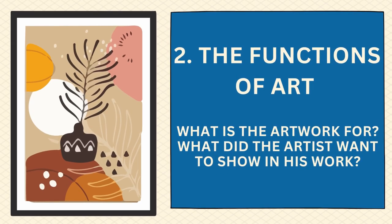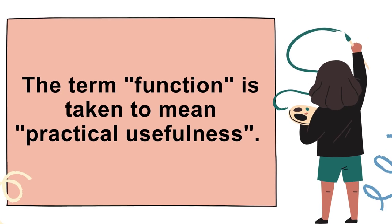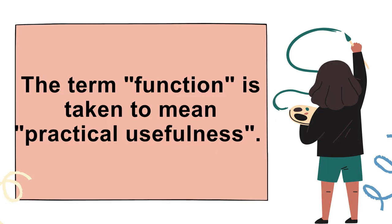The second principle of art is the function of art. It asks: what is the artwork for, and what did the artist want to show in his work? The term function refers to practical usefulness. Architecture, weaving, furniture making, and car assemblage have obvious purposes and are classified as functional. Painting, sculpture, literature, music, and the theater arts provide a pleasant escape from daily problems and entertainment, so they are classified as non-functional.